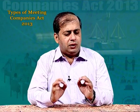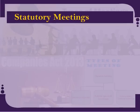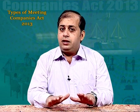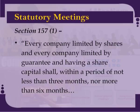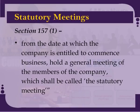Now let us discuss various types of meetings in further detail. Let us first begin with statutory meetings. The statutory meeting is the first meeting of the members of the company after it commences its business. It is held only once in the entire lifetime of the company. Section 157 subsection 1 of the Companies Act states that every company limited by shares and every company limited by guarantee and having a share capital shall, within a period of not less than 3 months nor more than 6 months from the date at which the company is entitled to commence its business, hold a general meeting of the members of the company which shall be called as the statutory meeting.